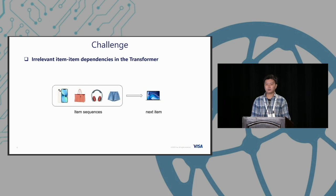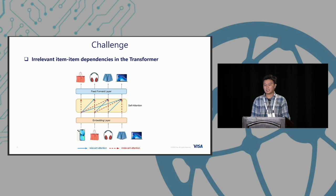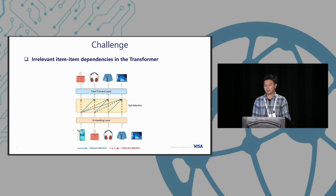What we're trying to address is the interesting issue of how to detect noisy item dependencies in transformers. For example, given an item sequence in a transformer, we might not identify noisy items within it. We're trying to predict the next item as a MacBook, but the history contains items like a bag or clothes, which are not very close to the MacBook target. However, there are also two items very close to MacBook — like an iPhone and headphone. Traditional transformers like SASRec and BERT4Rec did not consider this kind of noisy item-item dependency.